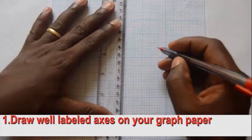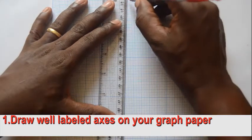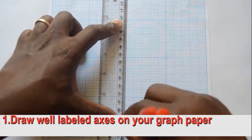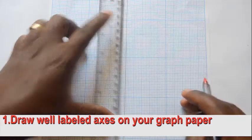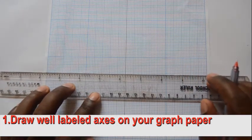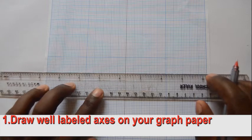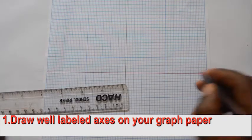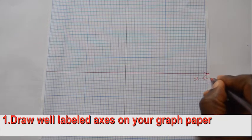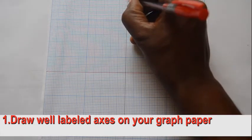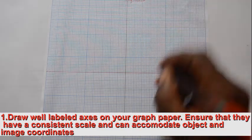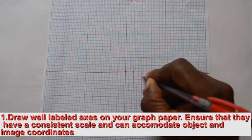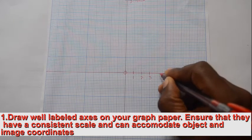Draw well-labeled axes on a squared paper, commonly known as a graph paper. Ensure that axes have a consistent scale and are strategically placed to give room for object and image coordinates.